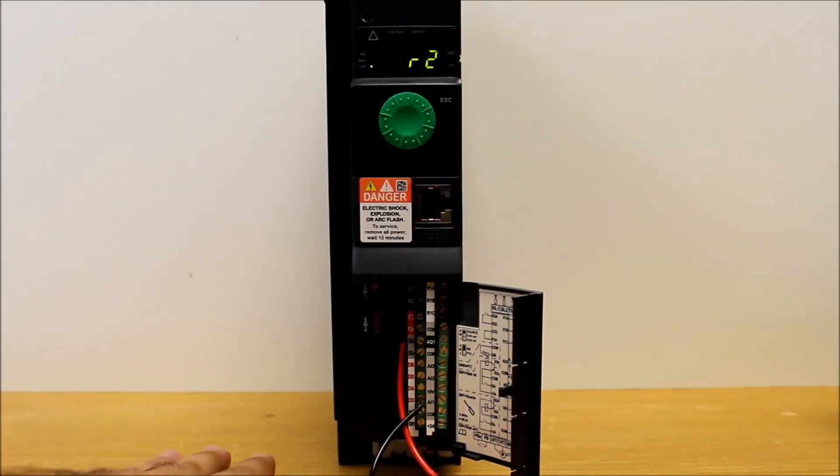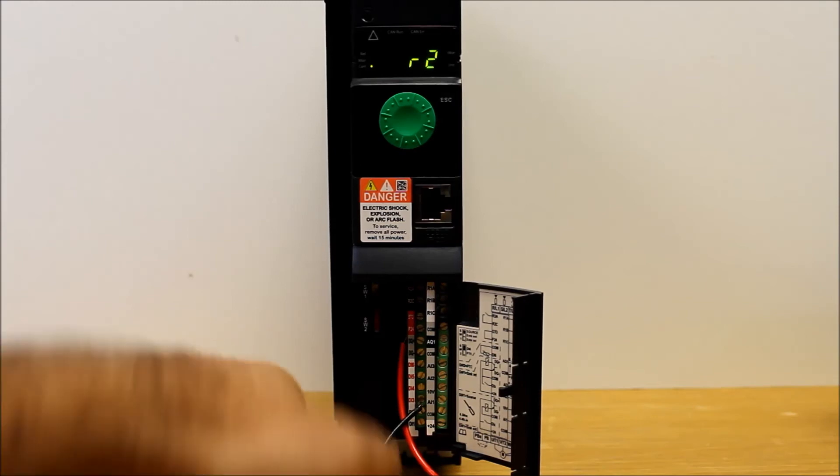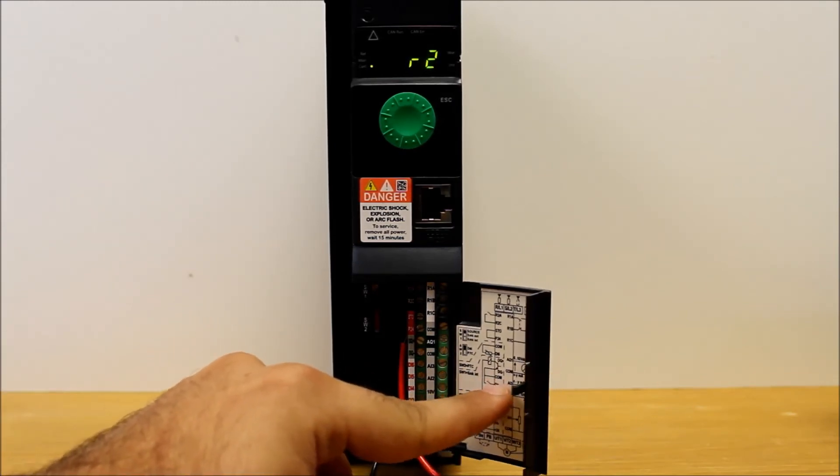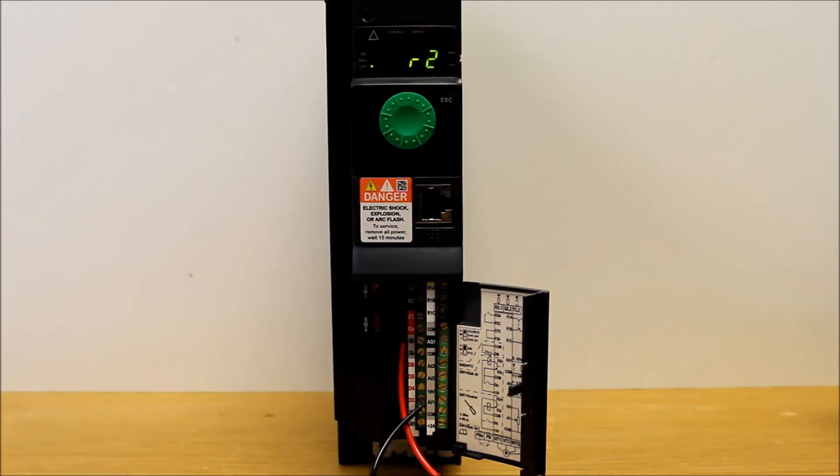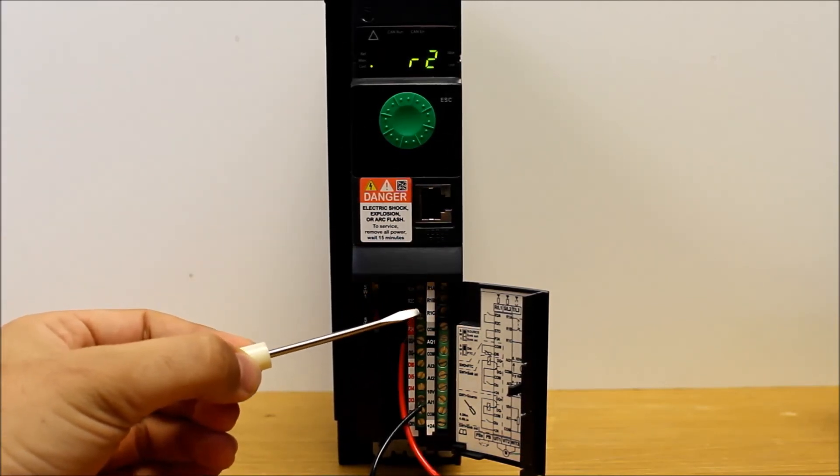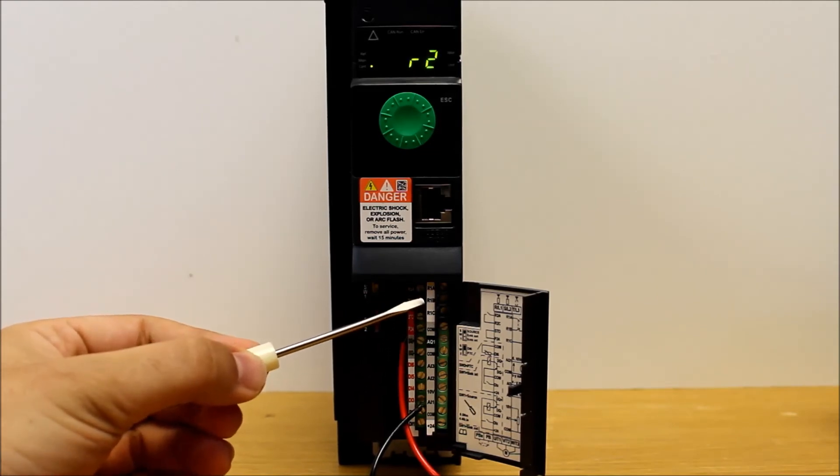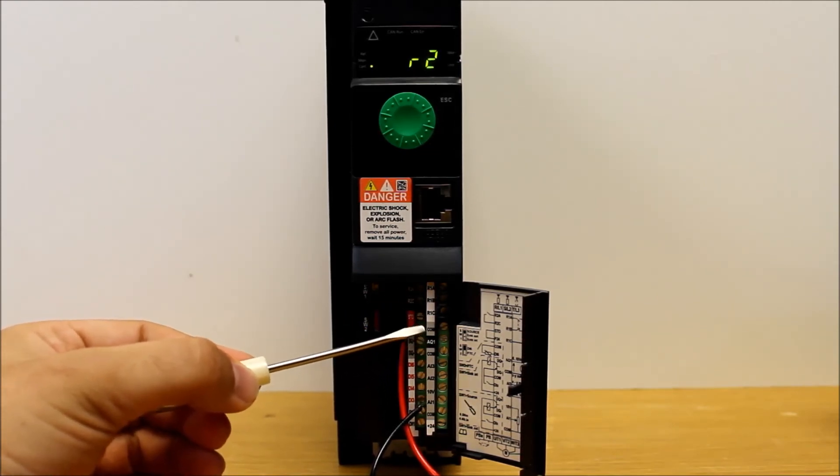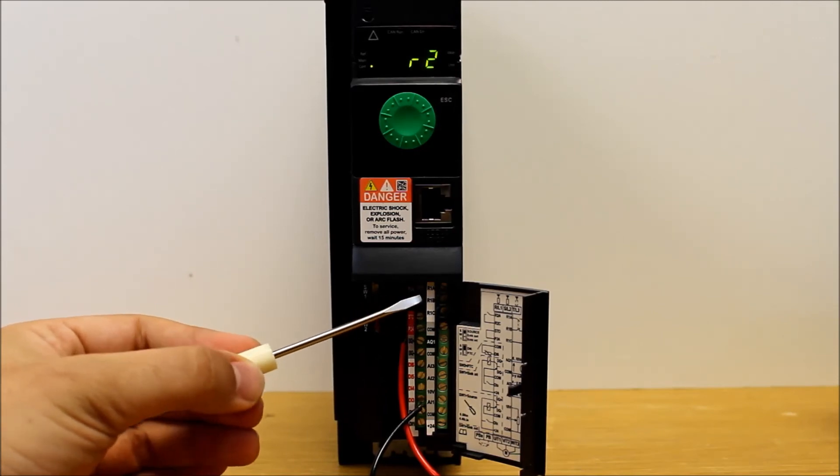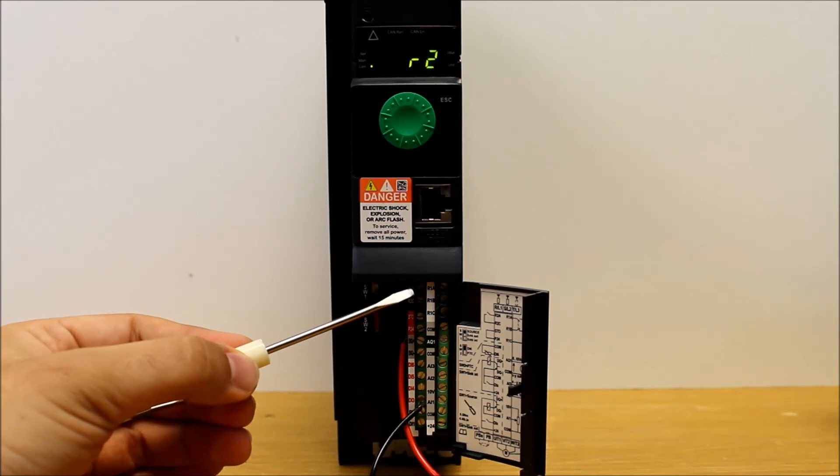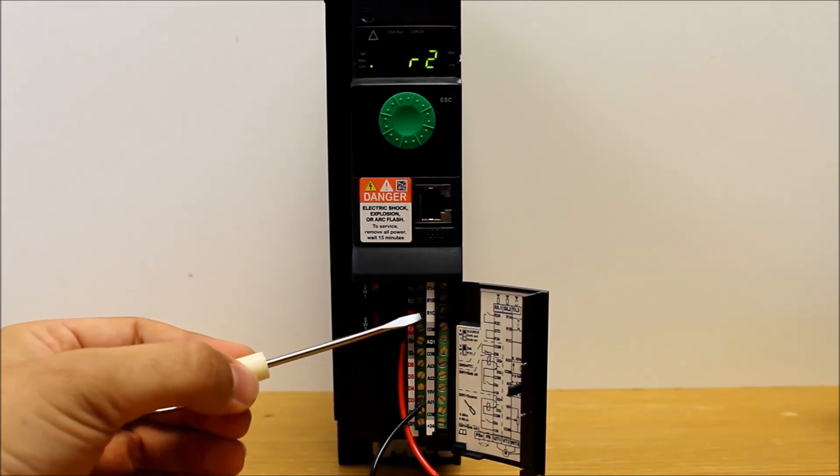Let's just say as an example that you want to close the R1 relay at the event of a fault, and you also want to close the R2 relay in the event of a run status of your motor. So what you want to do then for the R1 for fault, you want to hook up to R1B and R1C so that when you have a fault, you will close the contact. Fault is kind of backwards or seems kind of backwards. But keep in mind that R1B and R1C will close in a fault and R1A and R1C will open in a fault. So keep that in mind.